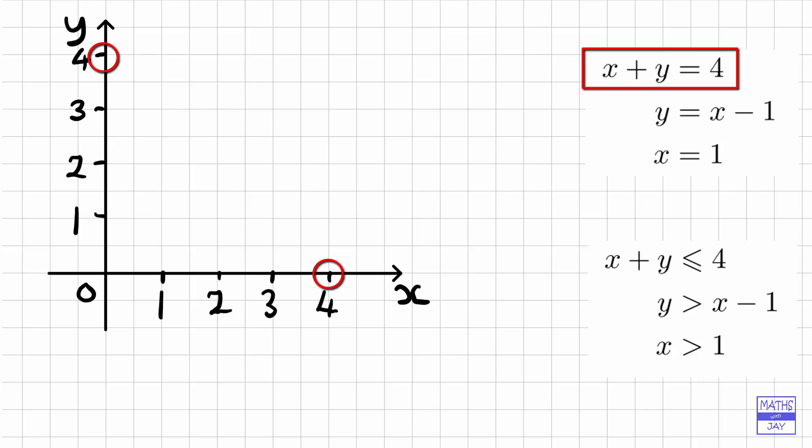But another way of doing it is just to plot a few points. For example, you could choose when x is 1, y would be 3. When x is 2, y would be 2, and so on. So let's just draw that line. There we've got x plus y equals 4.